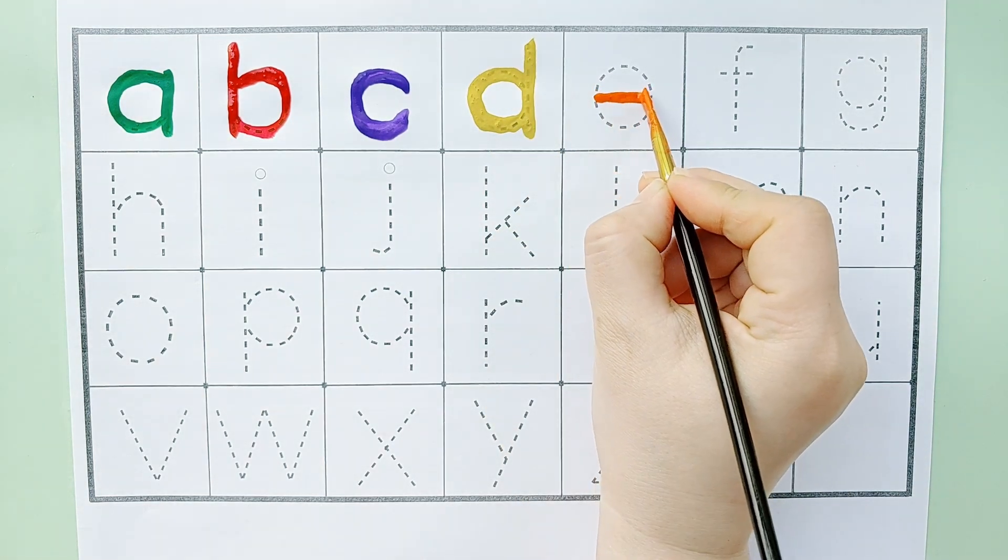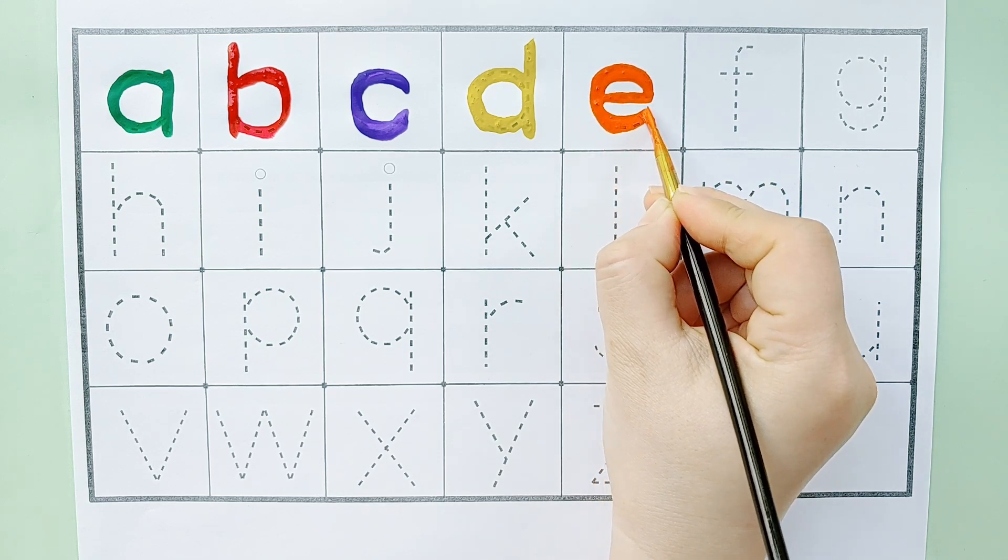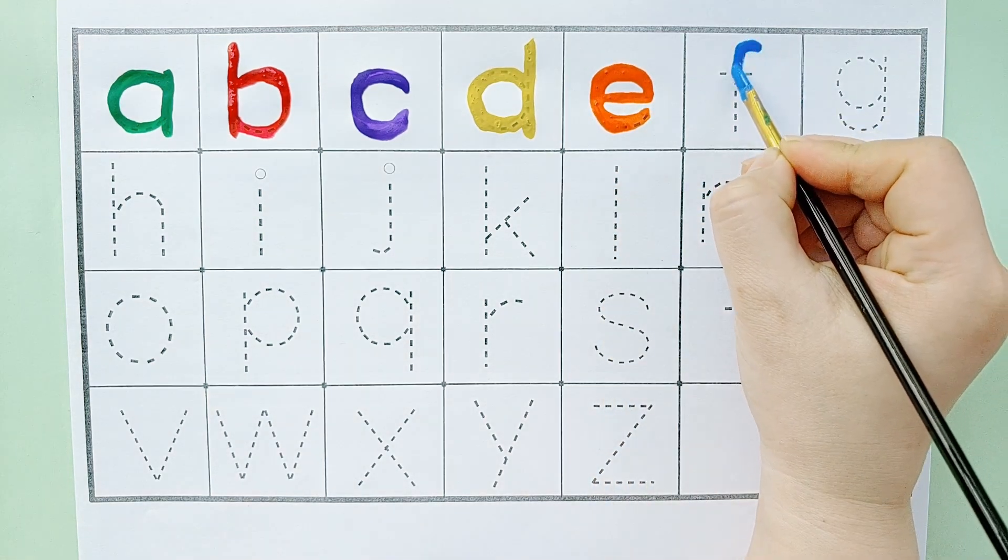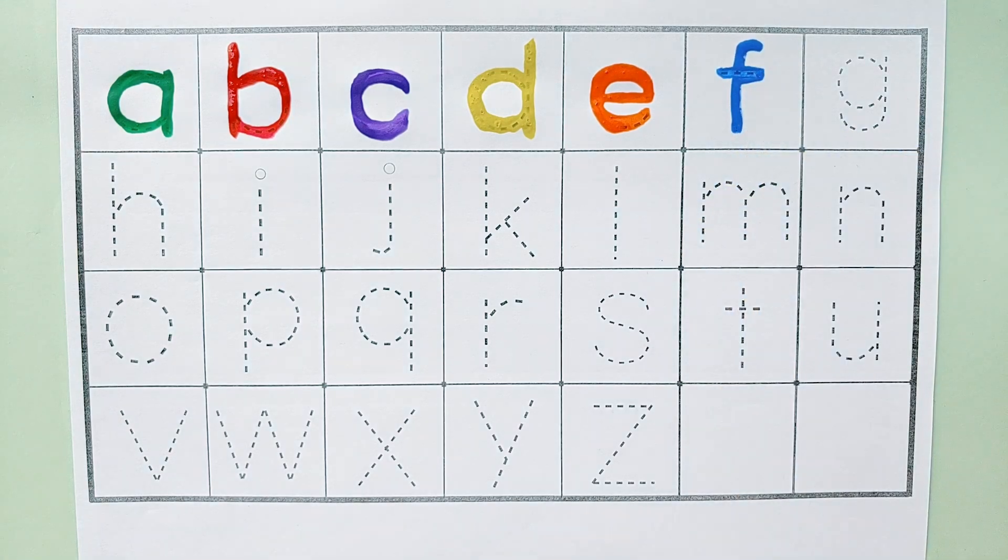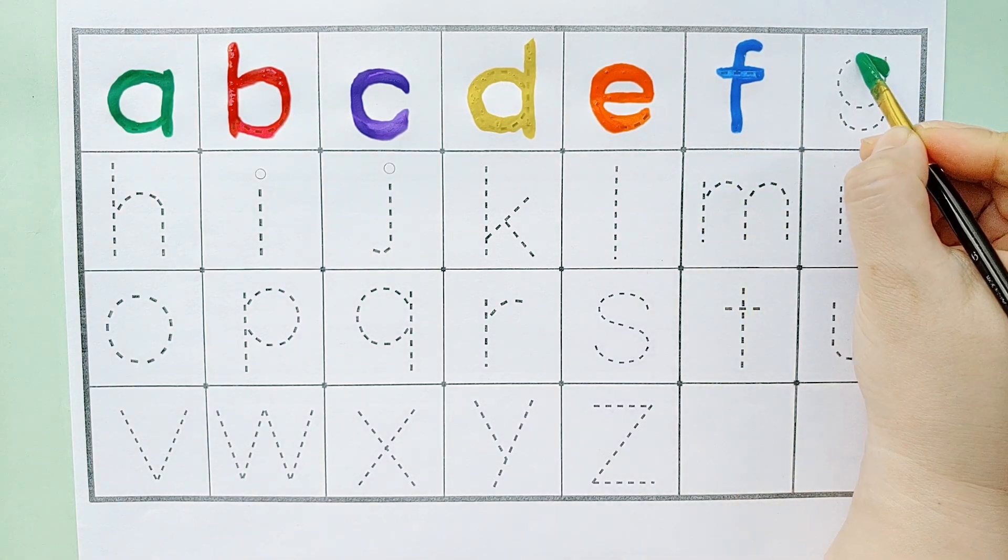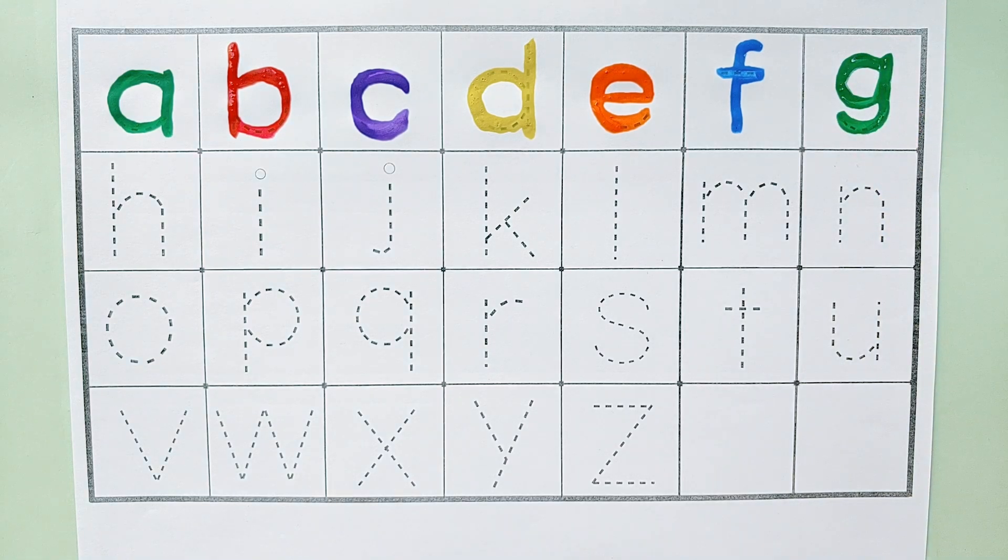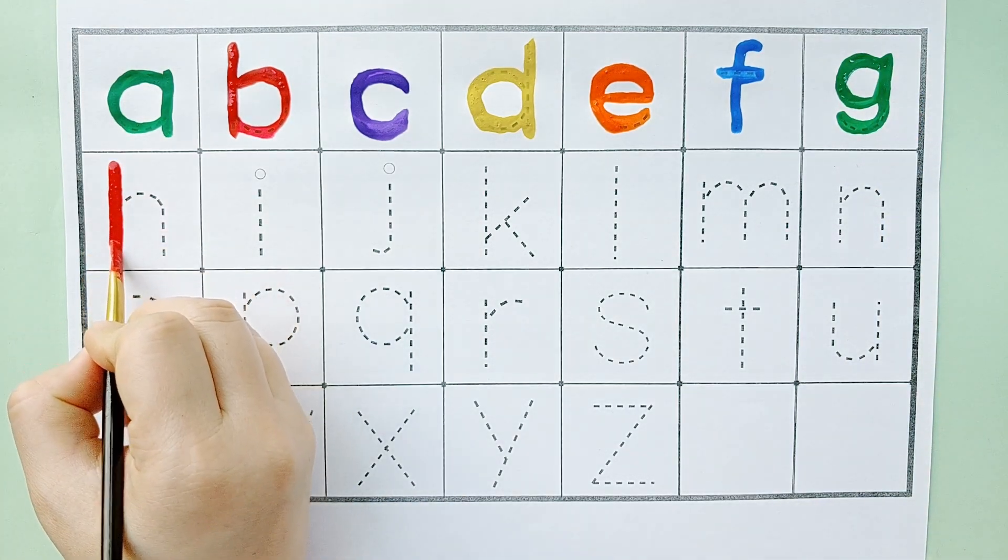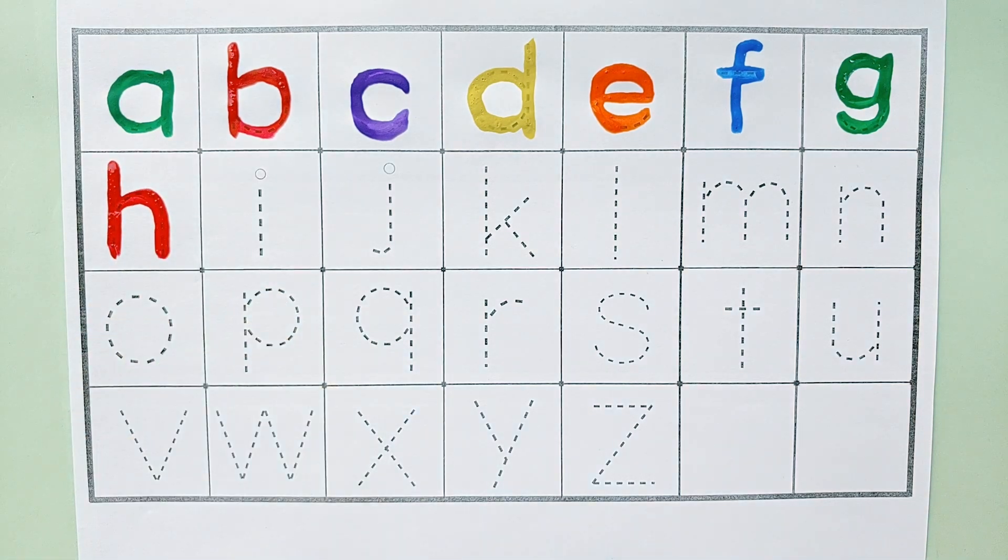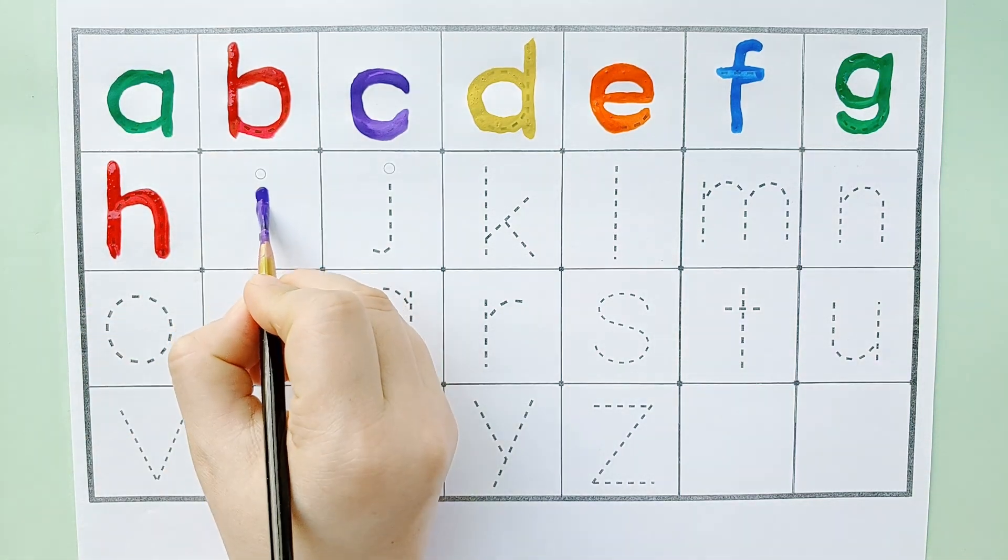A, B, C, D, E, F, G, H, I, J, K, L, M, N, O, P Q, R, S, T, U, V W, X, Y, and Z. Now I know my ABCs, next time won't you sing with me.